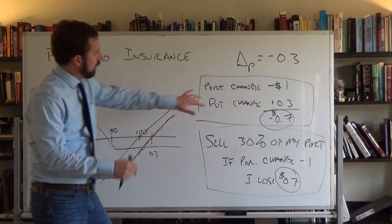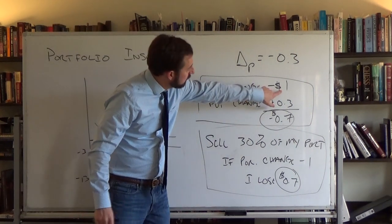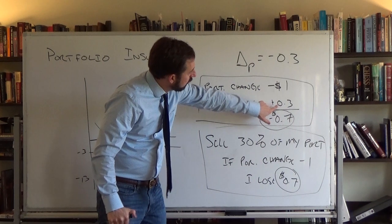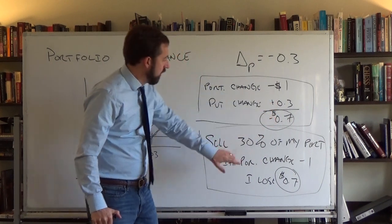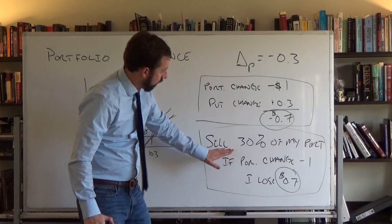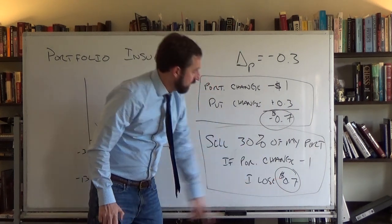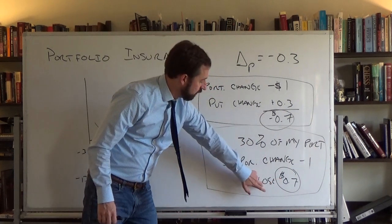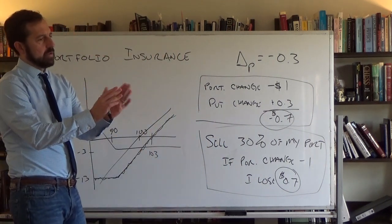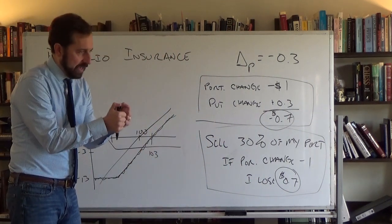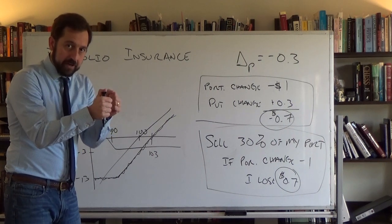I've replicated — and if my portfolio increases by a dollar, then I lose 30 cents on the put but gain 70 cents net. If my portfolio increases by a dollar, I'll gain 70 cents here, whereas with the put I'm losing 30 cents on the option but gaining on the portfolio. Whether the portfolio goes up or down, within this small interval I've replicated the protective put position.